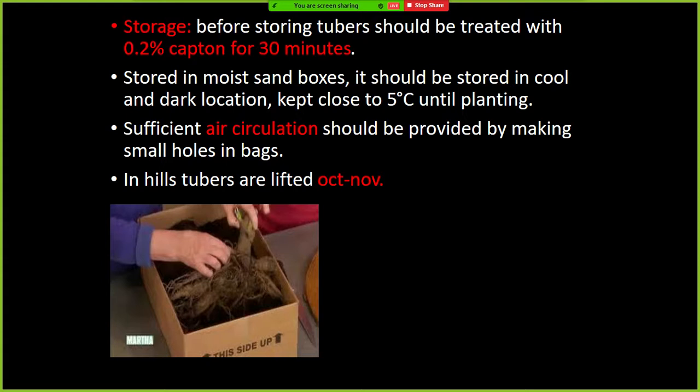Dahlia tubers consist of inulin and fructose. The inulin extracted from Dahlia is mainly used for the diagnosis of renal function — the kidney and its nearby organs are part of the human excretory system. Remember this important point: inulin extracted from Dahlia is used for diagnosis of renal function.